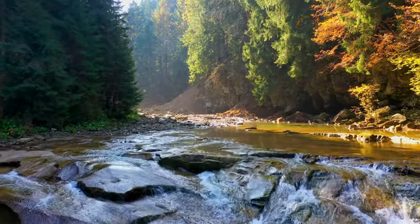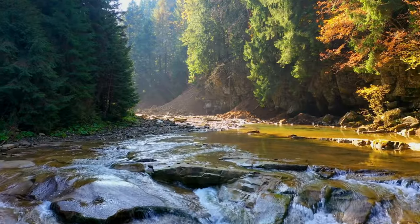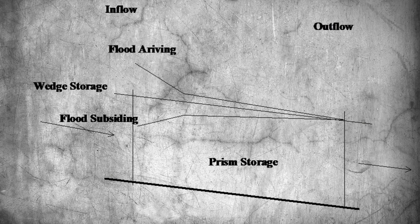But how does it work? Let's dive into the basics. Imagine a river reach — a segment of the river between two points. During a flood, water flows into this reach, causing changes in storage. We can break down this storage into prism storage and wedge storage.